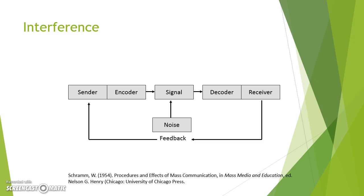Unfortunately, that signal is prone to interference, which Schramm calls noise. Think for a minute about the types of things that can interfere with what you're trying to tell someone — both from the sender's perspective and as the receiver, what kinds of things make you not able to hear a clear signal. Some of these things in a classroom could be actual noise like a loud air conditioner or mowing outside the windows, but they can also be things like if someone is really hungry or really tired and not really paying attention.